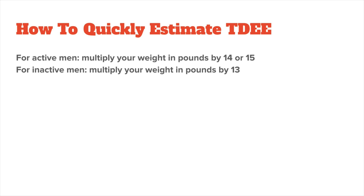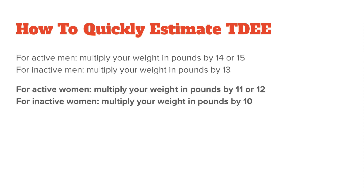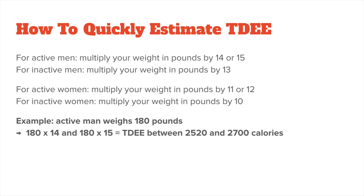For a moderately active man, multiply your weight in pounds by 14 or 15. And for an inactive man, multiply your weight in pounds by 13 to get your TDEE. For a moderately active woman, multiply your weight in pounds by 11 or 12, and for an inactive woman, multiply it by 10. For example, if you're a man who trains regularly at the gym and weighs 180 pounds, you would simply multiply 180 by 14 and then 180 by 15 to get a range of 2,520 to 2,700 calories as a good first estimate of your TDEE.